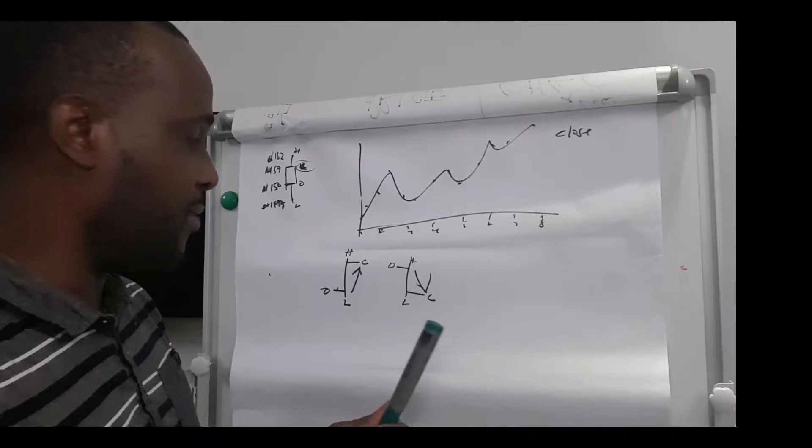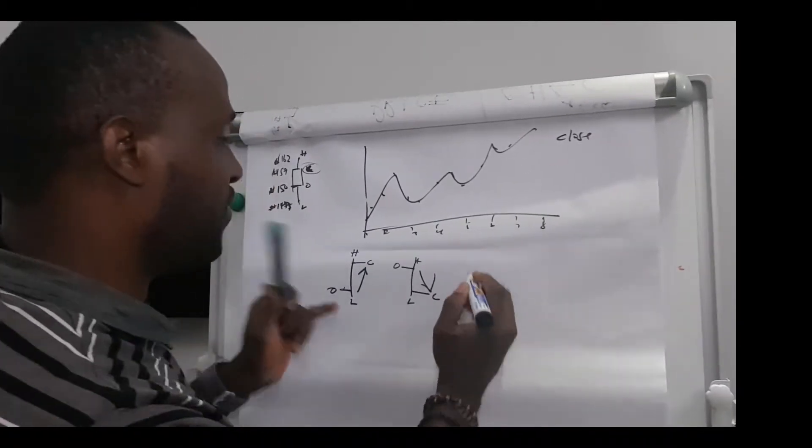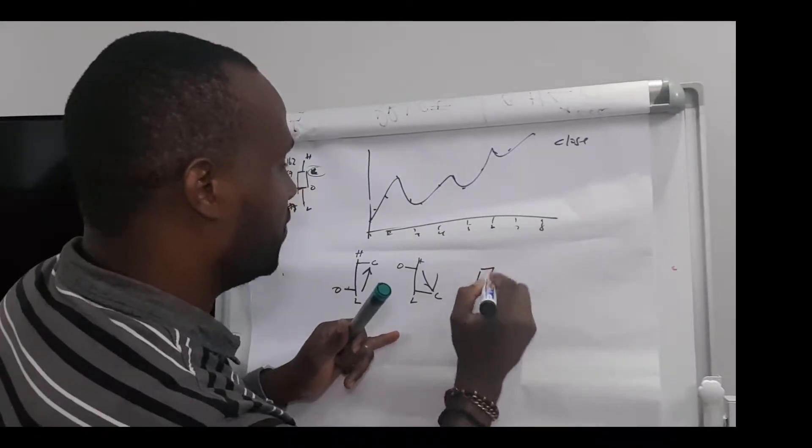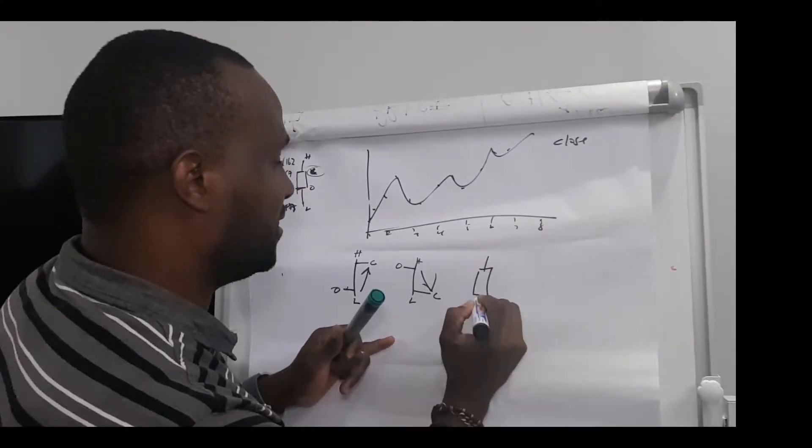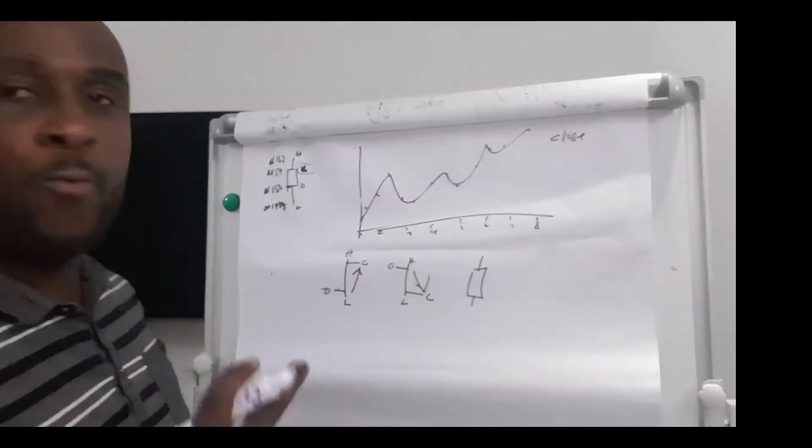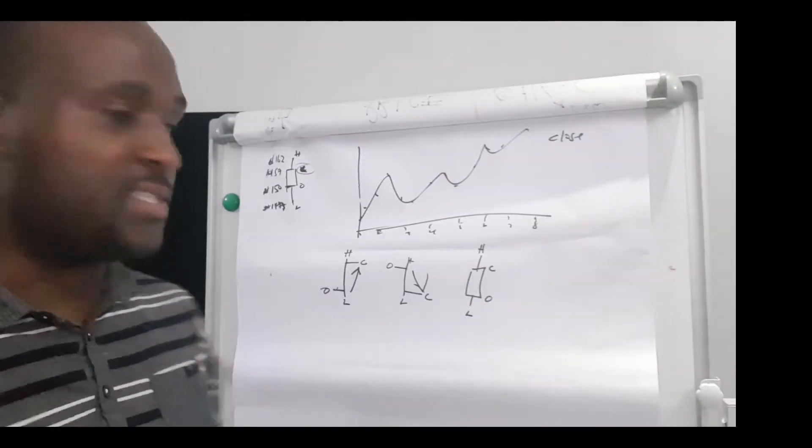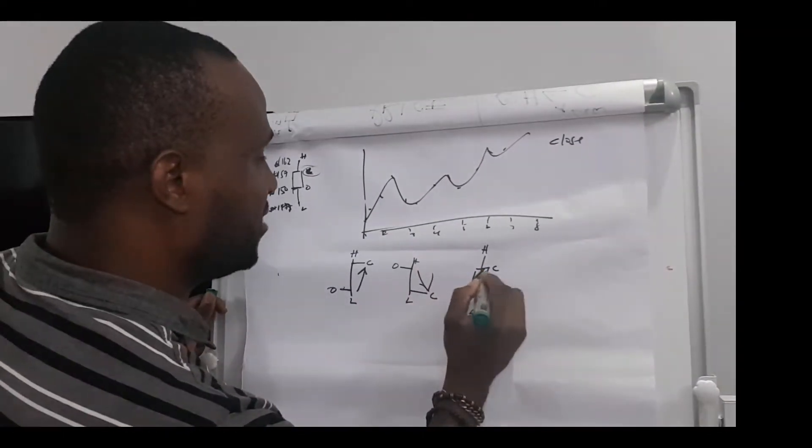With the candlestick, where we have the close price higher—so if the close price is here which is higher and the open price is here, the low price is here and the high price is there—I tend to represent that as a green candle.